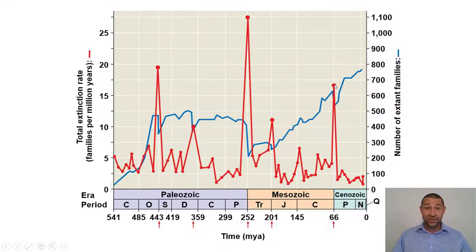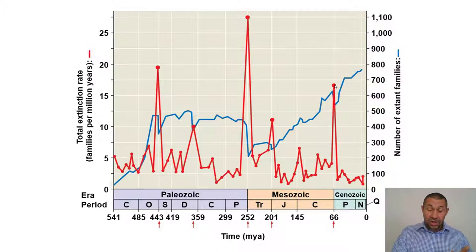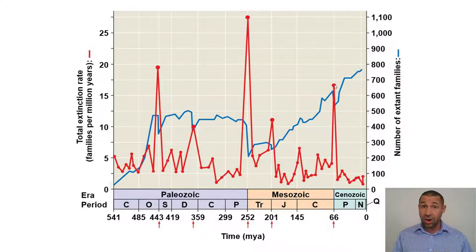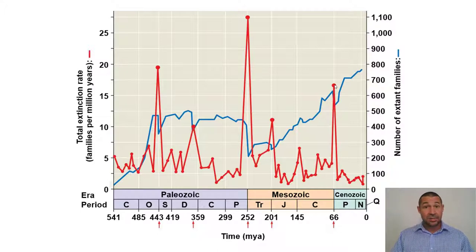The End-Cretaceous is going to allow for the age of mammals, which is what we'll conclude with today. Some, including myself, would make the argument that today we are currently in the midst of the sixth Great Extinction Event — but this one is not caused by supervolcanoes or asteroids. It's caused by a cosmopolitan African primate that is transforming the planet.